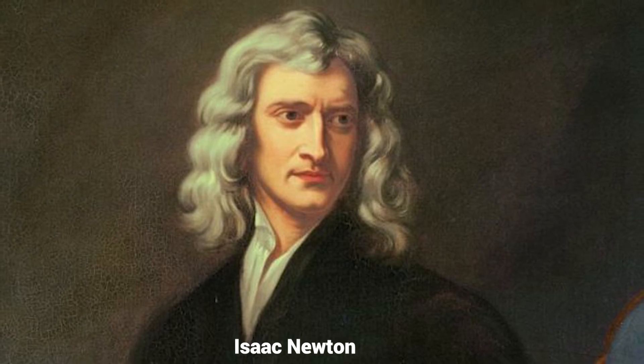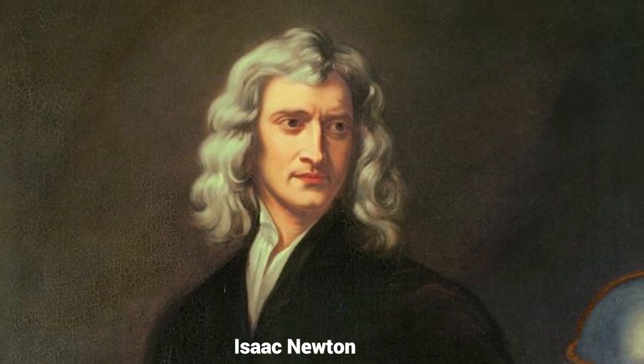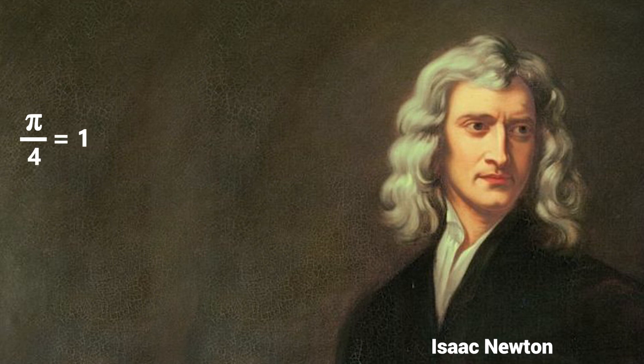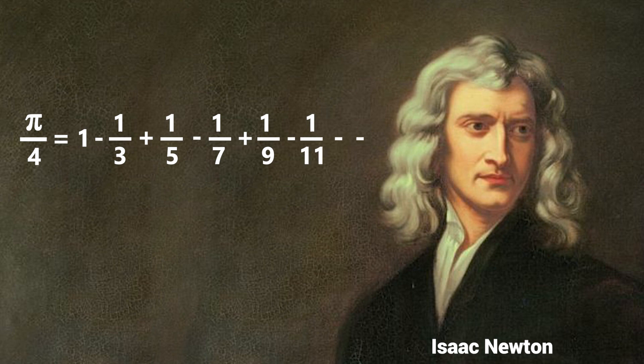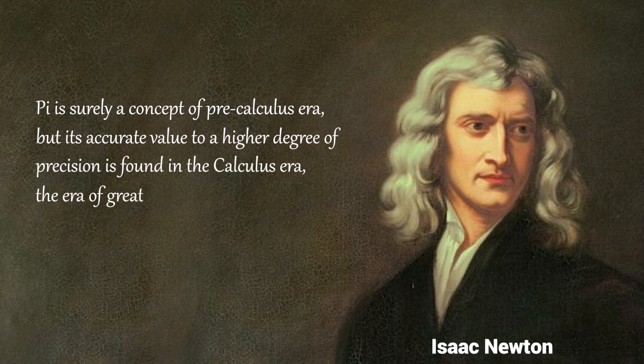Sir Isaac Newton arrives on the scene not long after that. No one will ever again bisect a polygon after Newton offers his approach. He came up with a formula to calculate the accurate value of pi up to any number of decimal digits we like. That too in an effortlessly easy and time efficient way. Pi by 4 equals 1 minus 1 by 3 plus 1 by 5 minus 1 by 7 plus 1 by 9 minus 1 by 11 and so on. This is the beautiful formula that Newton developed by applying the concepts of infinity and calculus. Pi is surely a concept of pre-calculus era, but its accurate value to a higher degree of precision is found in the calculus era, the era of great Newton.